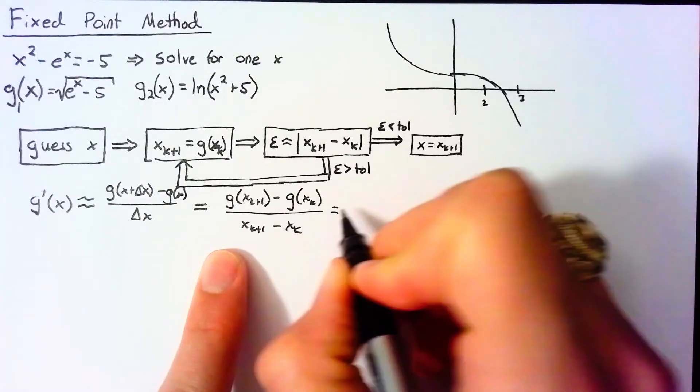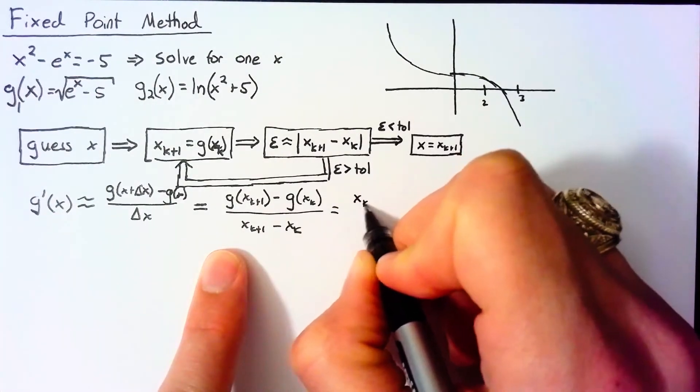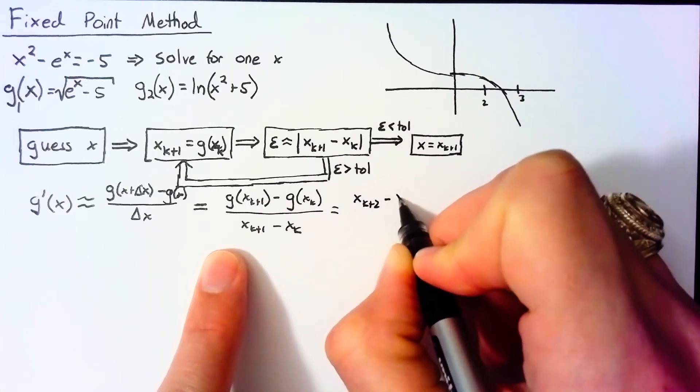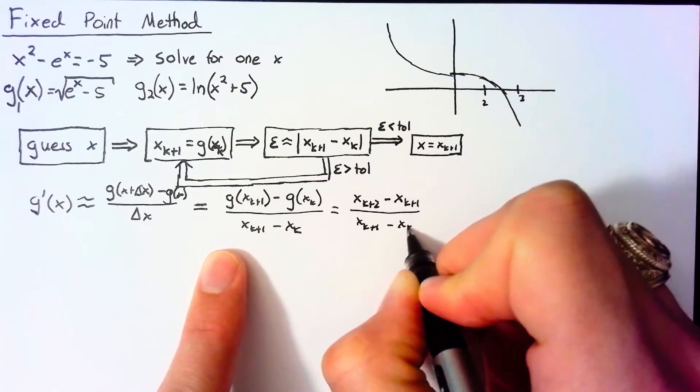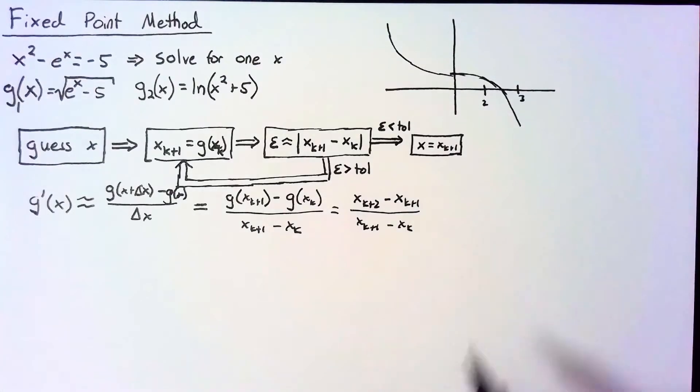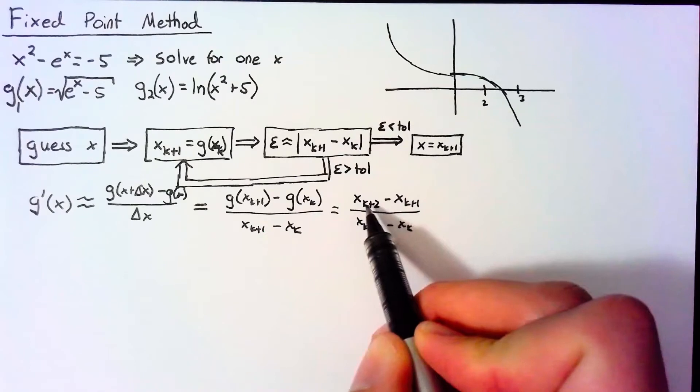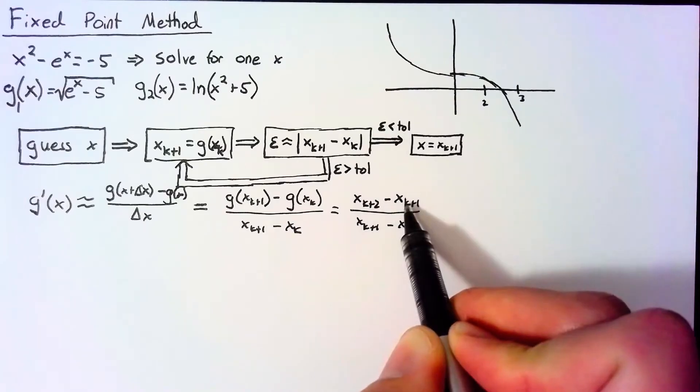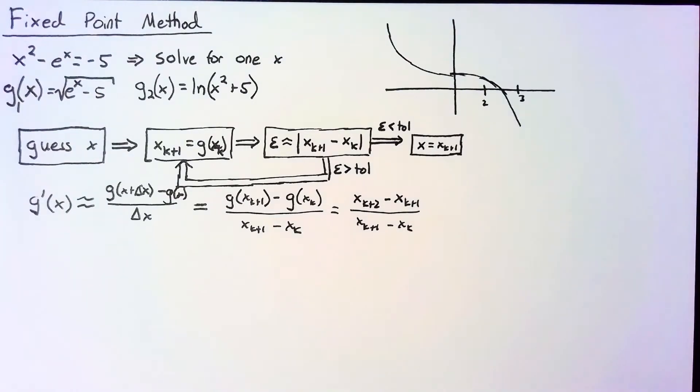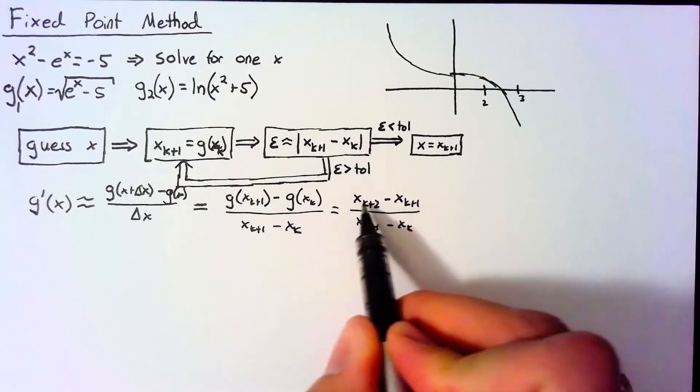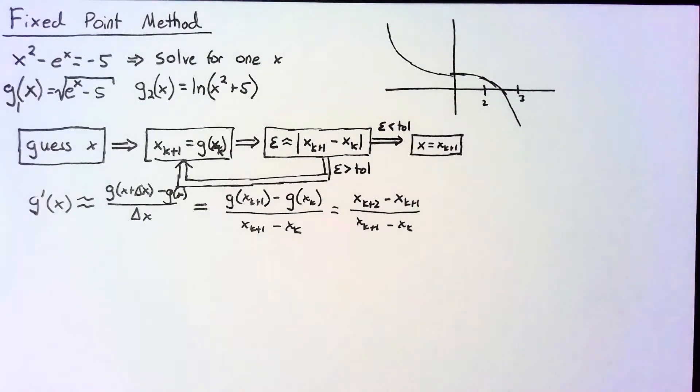If we want to relate this to our equation up above, we're saying that [g(x_(k+1)) - g(x_k)] / [x_(k+1) - x_k] is approximately equal to g'(x). Well, this is also equal to [x_(k+2) - x_(k+1)] / [x_(k+1) - x_k]. So what are we looking at here? We're looking at the space between two of our guesses divided by the space between essentially the two previous guesses.